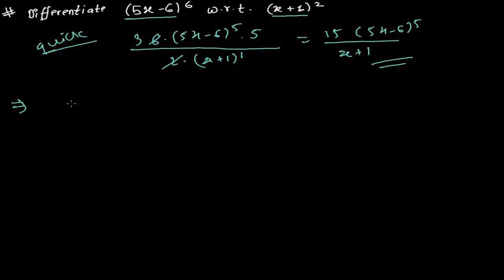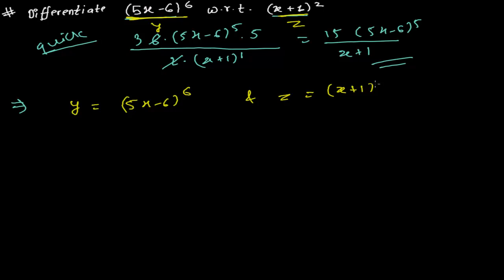Let our first function be y = (5x − 6)^6. Imagine this as a function y, and imagine another function z, where z = (x + 1)^2. Now you need to find the derivative of y with respect to x, and also the derivative of z with respect to x, since x is the core base variable.